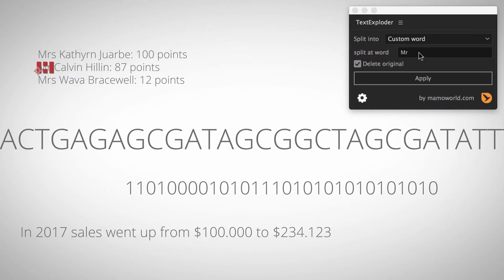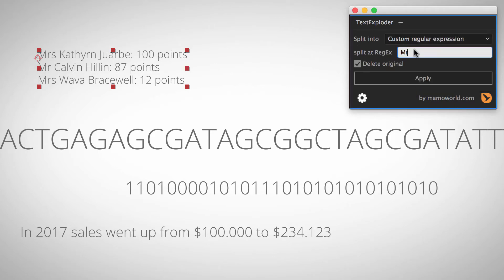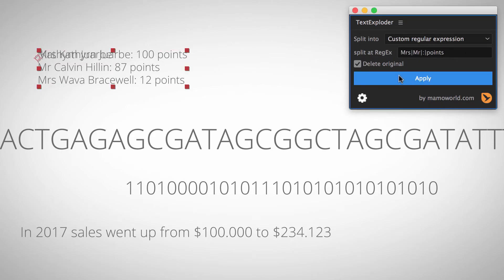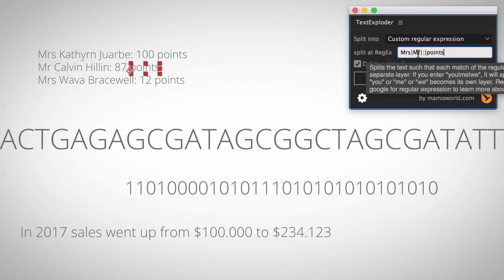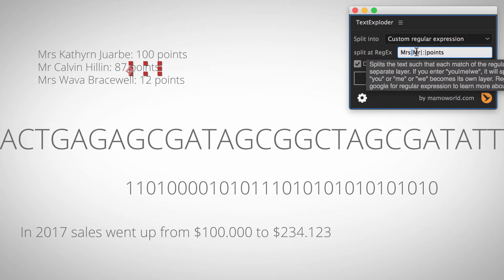This is often good enough, but you can do this quicker with regular expressions — let me quickly undo all of this. With a regular expression you can do all those splits at the same time. You can say: if you find 'missus' split at this point, or 'mister', or the colon, or 'points' — these are essentially all the splits we did before. Using this vertical bar, which means OR, we just select it, click apply, and in one run of the tool everything is isolated as expected.